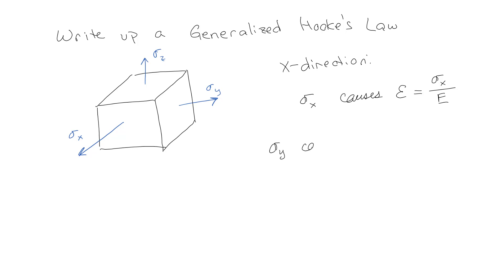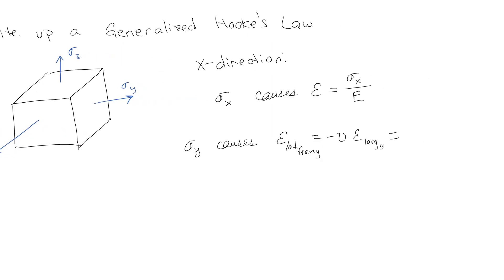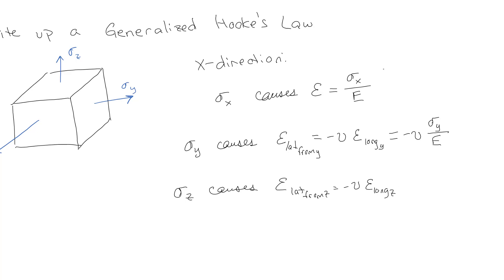The stress in y is going to cause a lateral strain from the y direction: negative nu times the longitudinal elongation from y, which is sigma y over E. Similarly, the stress in z is going to cause a lateral strain from the z direction equal to negative nu times the longitudinal elongation in z, which is sigma z over E.